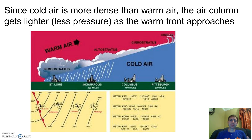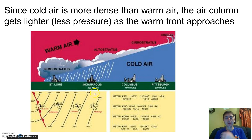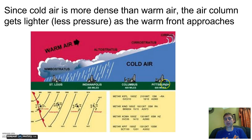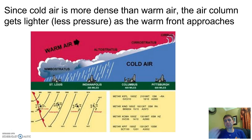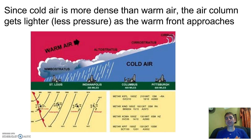Cirrus clouds are a leading indicator. Consider a warm front whose surface boundary is west of St. Louis, with warm air pushing over the top of cold air and moving the system east. High thin clouds are already visible way out by Pittsburgh — those cirrus clouds in the Pittsburgh sky signal that weather will turn bad in the next 12 hours or so. As the warm front slowly approaches, clouds get lower and thicker, which is a clear sign of an approaching warm front.